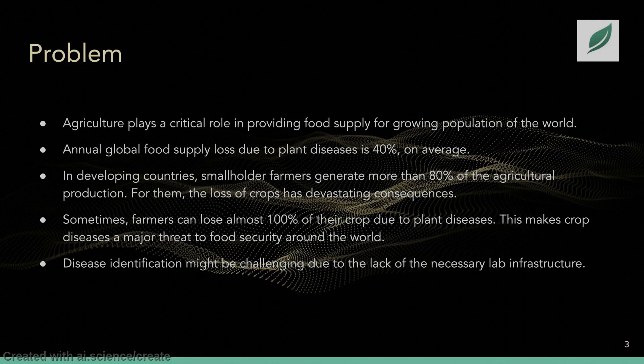For small farms, the loss of crops has devastating consequences, which makes crop diseases a major threat to food security around the world. It is critical for a farmer to identify the disease as early as possible so that they can take action and prevent the disease from spreading to the entire crop. However, this can be challenging due to the lack of necessary lab infrastructure, and it is also difficult for a farmer to consistently monitor their field as it takes a lot of time and effort.